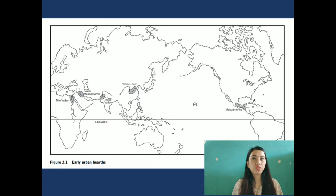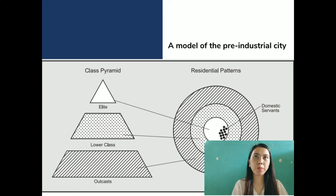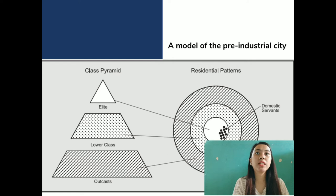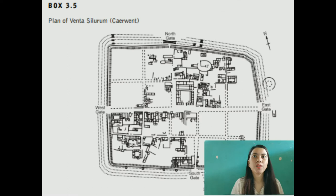As figure 3.1 illustrates, there is evidence of early city growth in four areas of the old world and one area of the new world. Figure 3.2 shows the fertile crescent of the ancient cities of the Middle East. Regarding the model of the pre-industrial city, Joburg's model attempts to identify some common cross-cultural features of the pre-industrial city. Like all models claiming a wide range of application, this model has been criticized for oversimplification and overextension, and is most appropriate in cities where domination by an elite occurred.